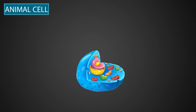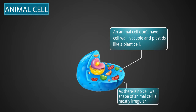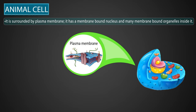Animal cells are eukaryotic cells, so they have a true nucleus and many specialized small bodies called organelles for carrying out different functions. An animal cell does not have a cell wall, vacuole, and plastids like a plant cell. As there is no cell wall, the shape of an animal cell is mostly irregular.